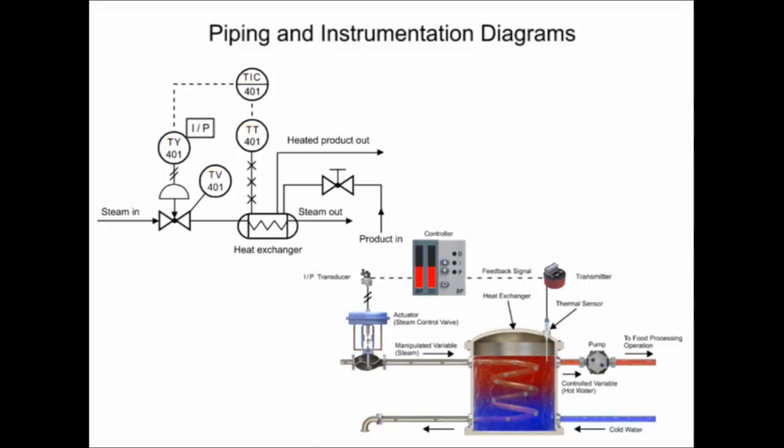The instrument connected to the heat exchanger contains two other types of information. The second letter in the functional identifier indicates it is a transmitter, and the balloon with no line inside its symbol indicates the device is field mounted.